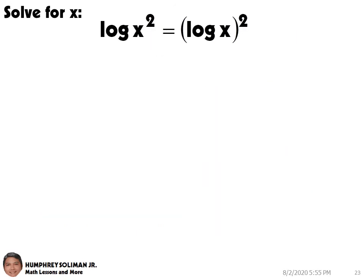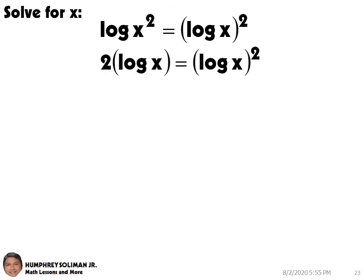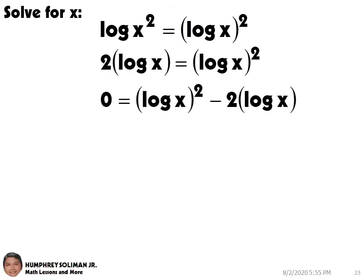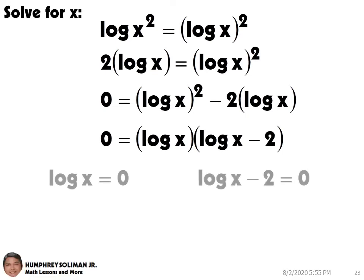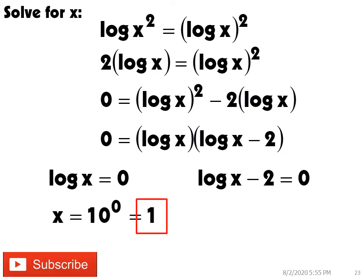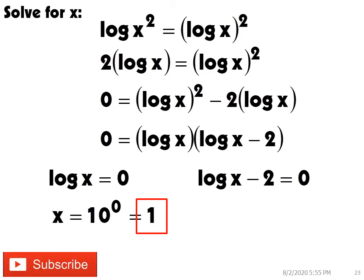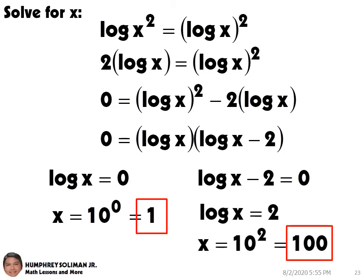Let's try another example. Here, we can put the exponent of x in front of the logarithm. And then, equate it to 0. We now have an equation that resembles a quadratic equation. Solving this using factoring, we can get 0 equals log x times log x minus 2. We can equate each factor to 0. Solving log x equals 0, we can get x equals 1. And, solving log x minus 2 equals 0, we can get x equals 100.